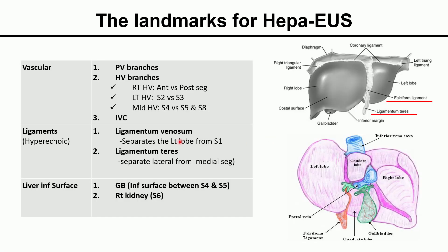At EUS, we need to know landmarks just as when we learn abdominal sonography. Various anatomical landmarks are used in ultrasound determination of segmental locations: vascular structures, ligaments, and the inferior liver surface.